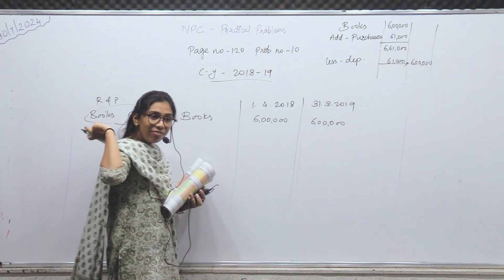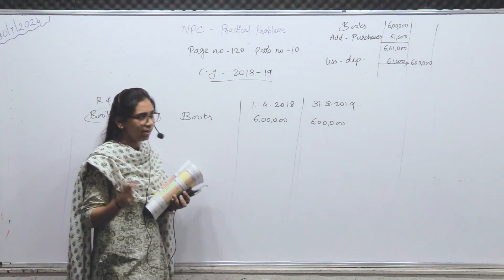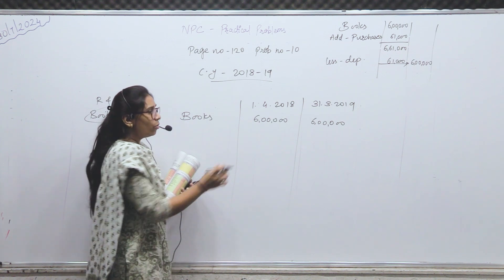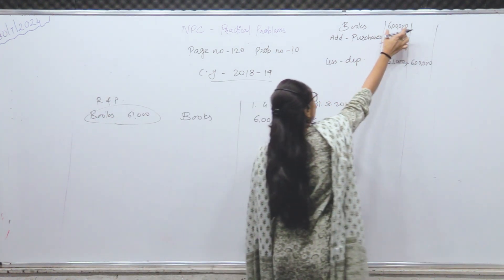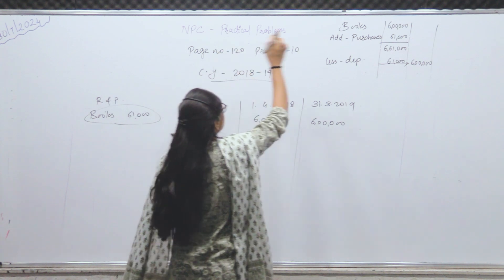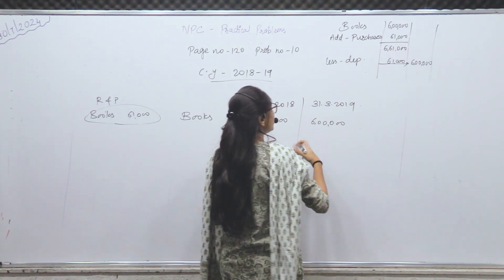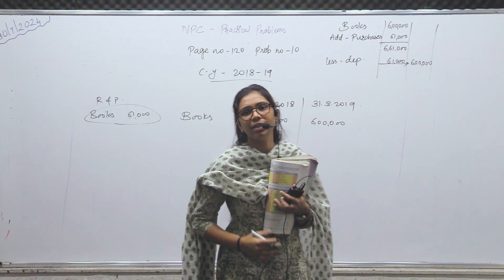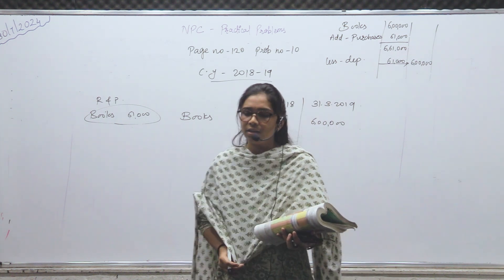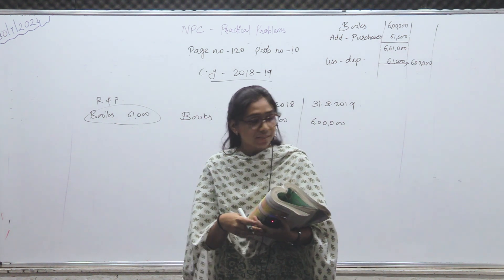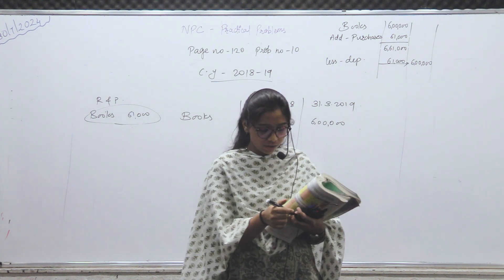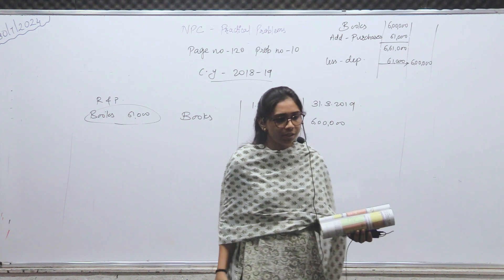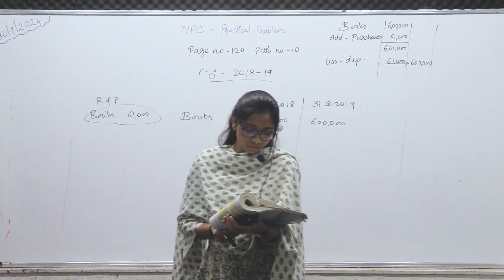What do we think from this? Depreciation — hidden depreciation is here. So how much depreciation? 61,000. Depreciation treatment you have to do — second effect — expenditure side. Opening balance added, purchases added, closing balance given — this is depreciation. Understood?